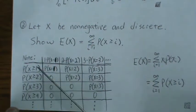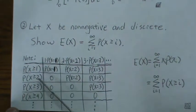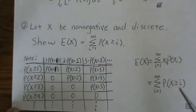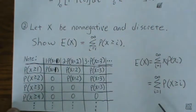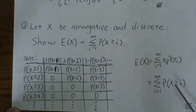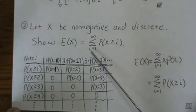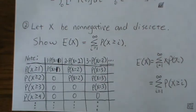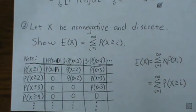Adding column by column is the same as adding row by row. Adding row by row: the first row gives P(X≥1), the second row gives P(X≥2), the third row gives P(X≥3), and so on. So those two formulas are equal — the expected value equals the sum of P(X≥i). Hope you enjoyed it, please subscribe, thank you.